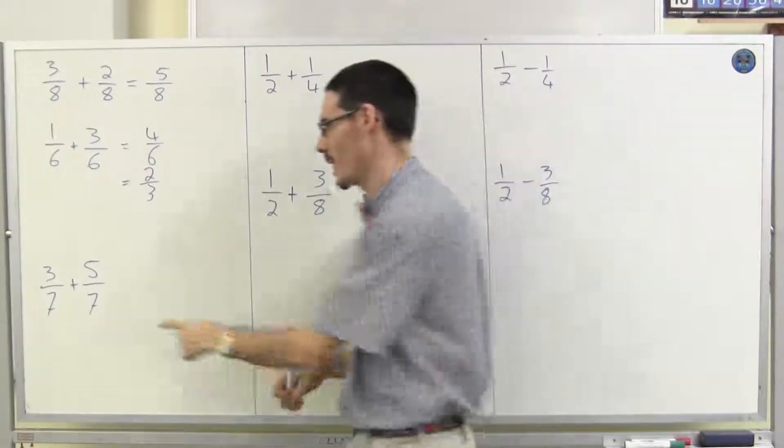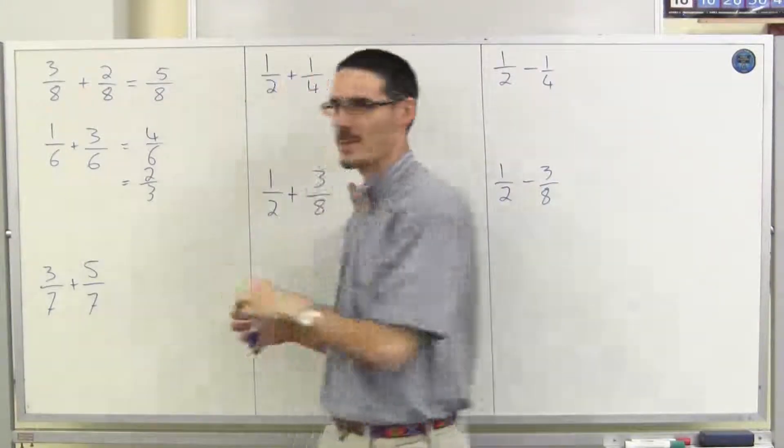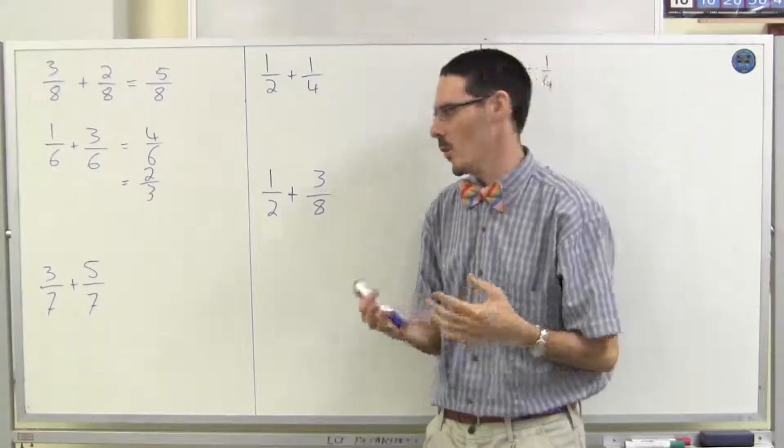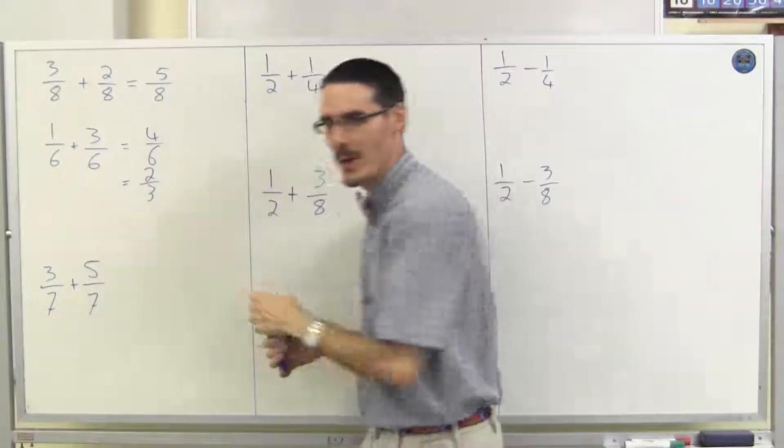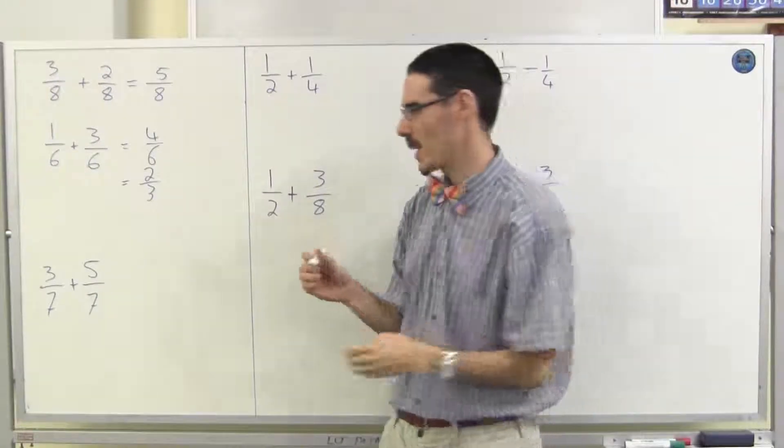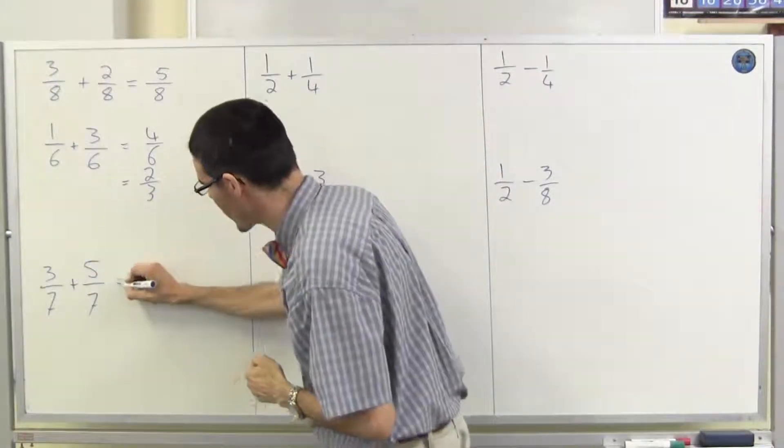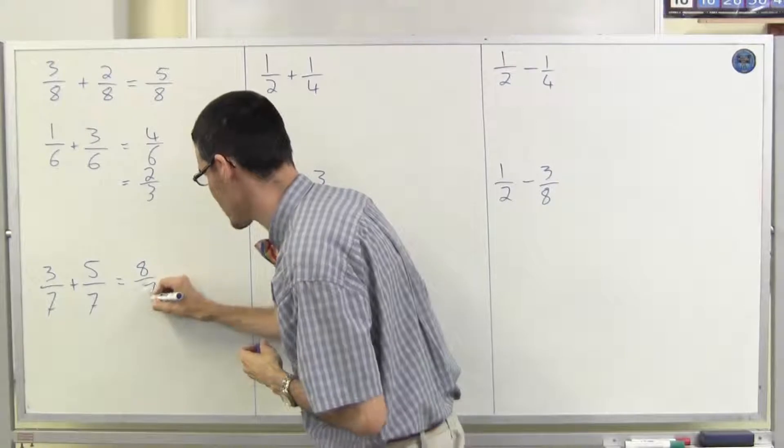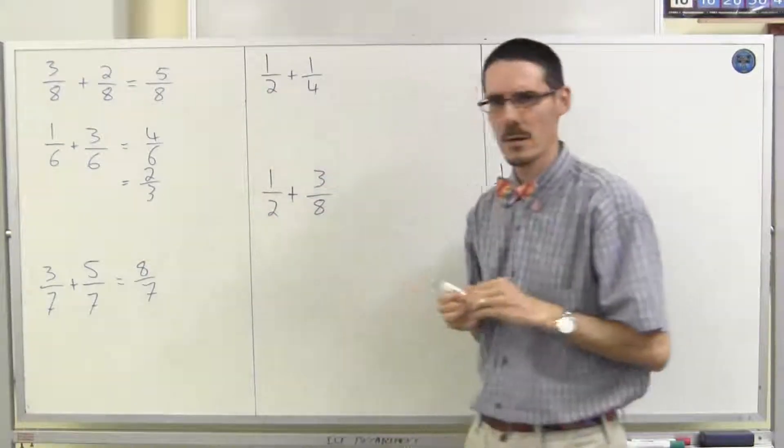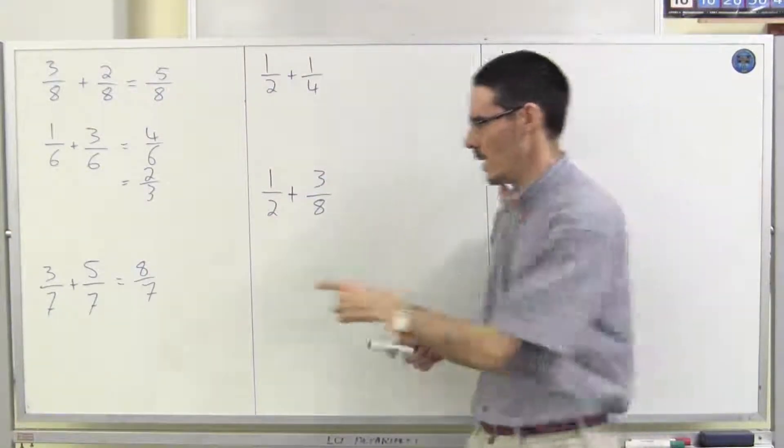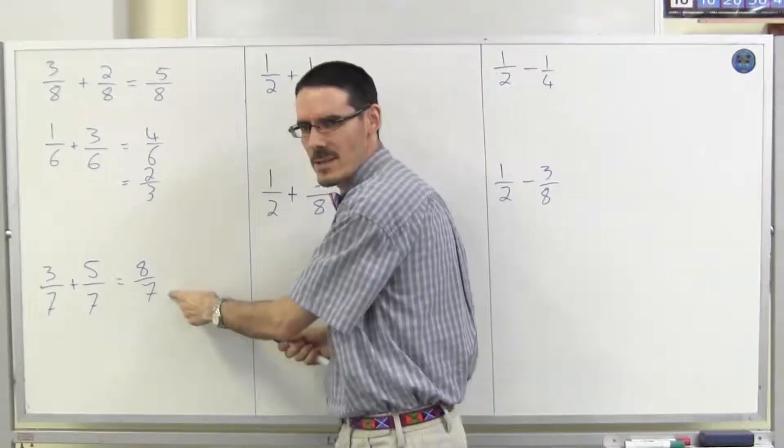Let's do another one. Three-sevenths plus five-sevenths. Well, again, I've already got them both with the same denominator, so I just add across the top. Three and five makes eight-sevenths. Oh, hang on a minute. Eight's bigger than seven. Is that okay?